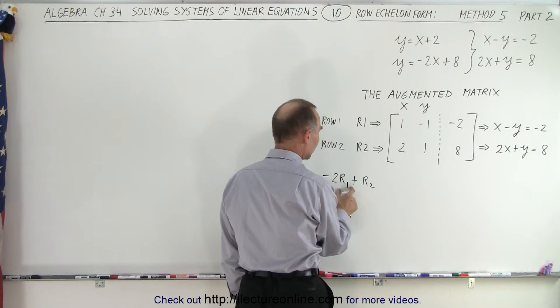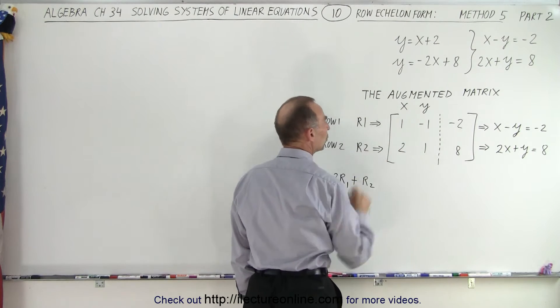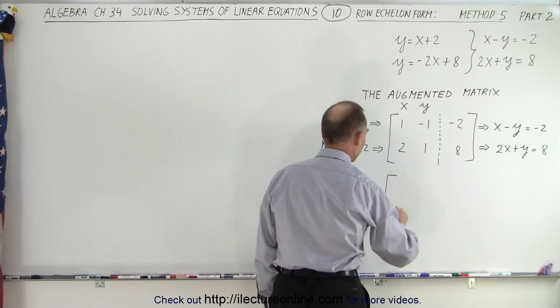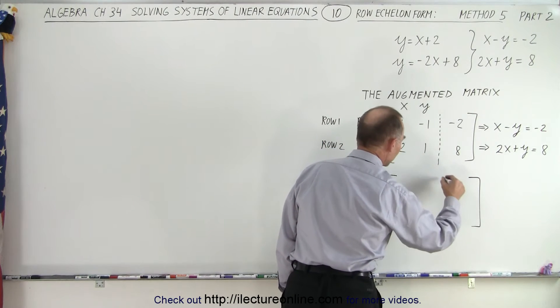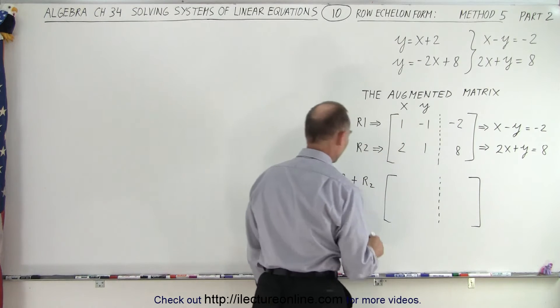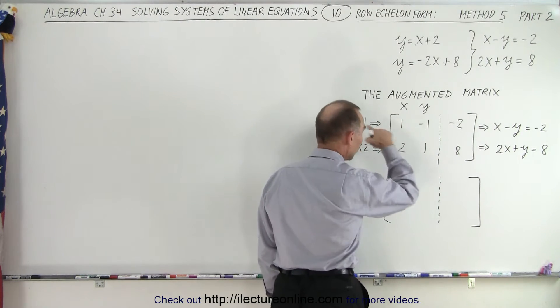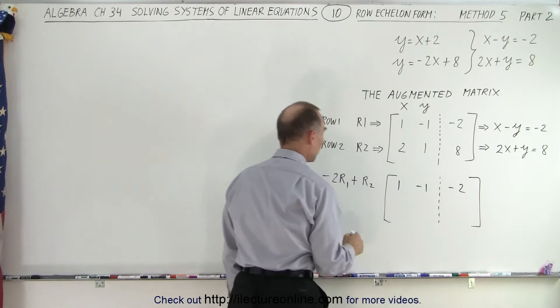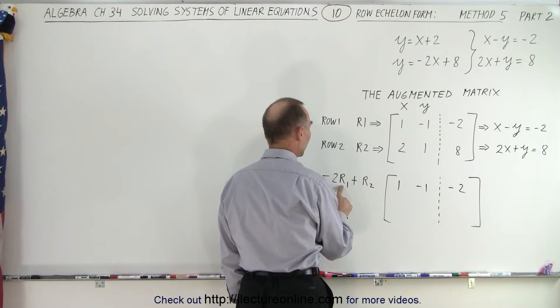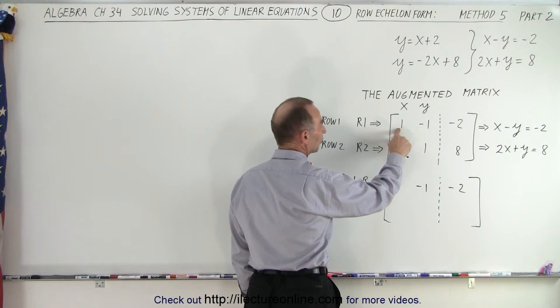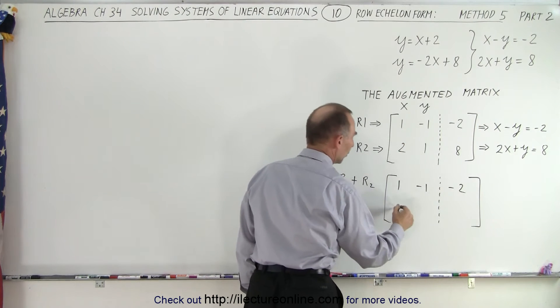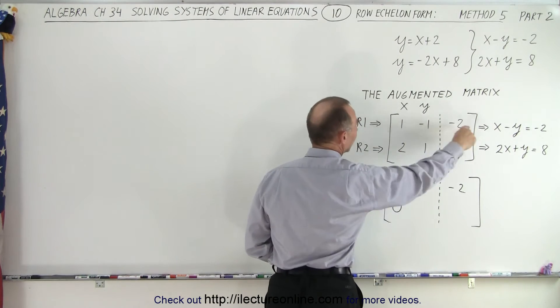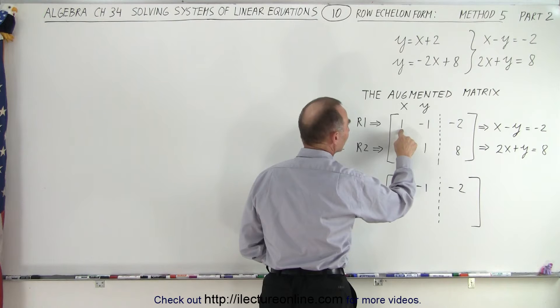We're going to replace row 2 by what this is equal to. So that means our new augmented matrix will become this. Notice we're not changing r1. Row 1 stays the same. Now what we're going to do is multiply row 1 by -2. So -2 times 1 is -2 added to 2, we get 0.